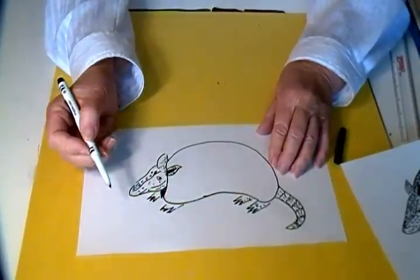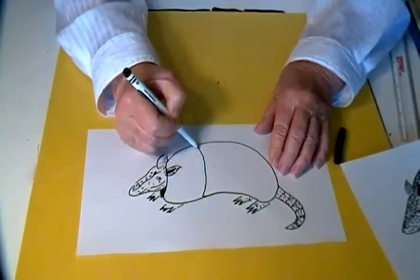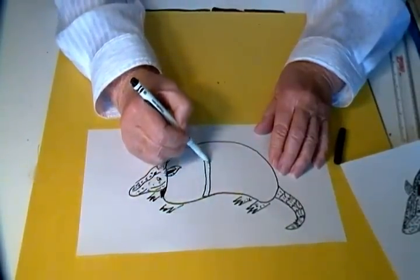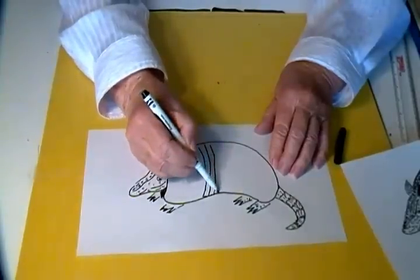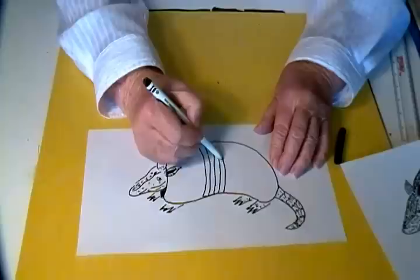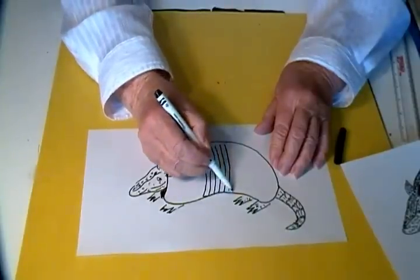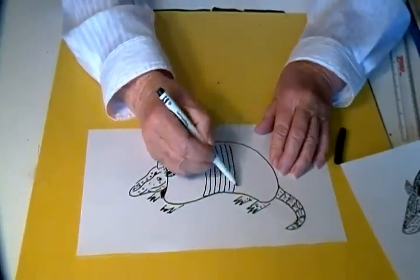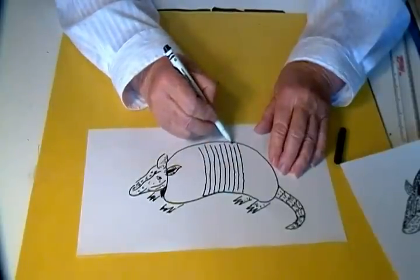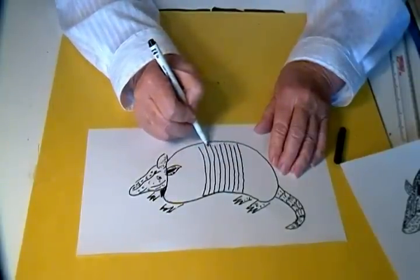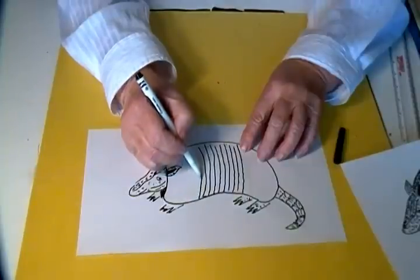Now a real armadillo has nine bands on its back. So we want to draw those in. Make sure that there are nine.